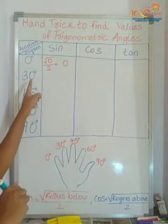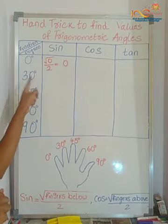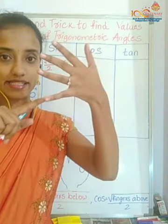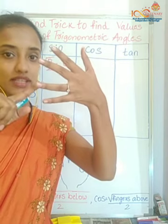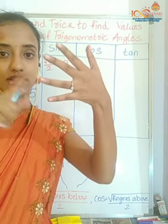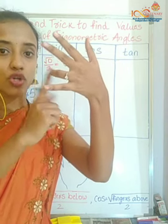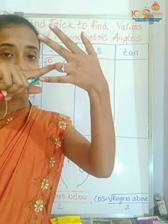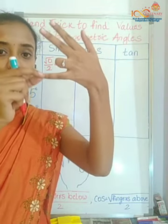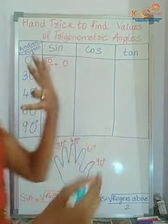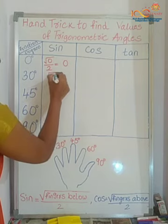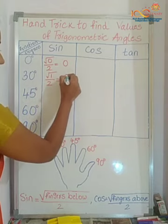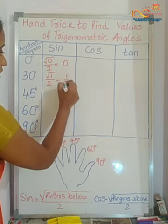Now let's find the value of sine 30. Take out your left hand again — 0, 30, 45. This is your 30-degree finger. Fold the 30-degree finger. How many fingers do I have below? I have just one finger. So it is going to be root of one divided by two, which equals one-half. Sine 30 equals one-half.